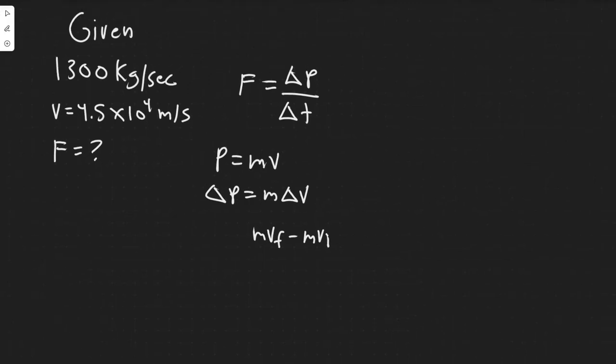So if we want to solve for this, we can plug this in here. So F equals mv final minus mv initial, and then you would go ahead and divide by the change in time.